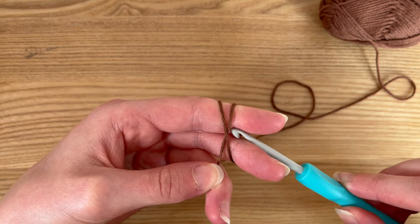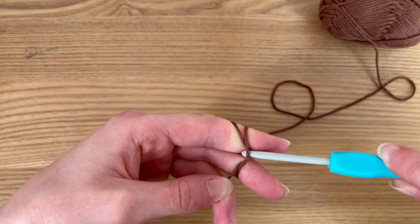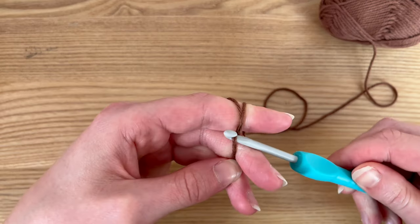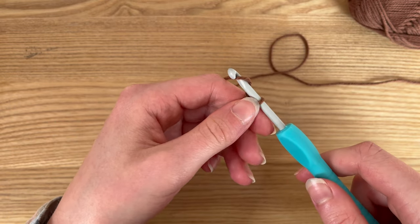Get your crochet hook, hook it under the first strand and above the second, and bring it through. Now yarn over and pull through the active yarn connected to the ball.